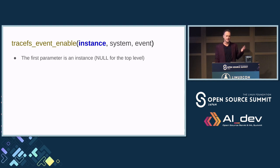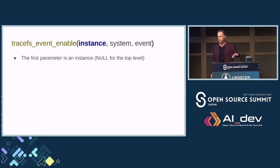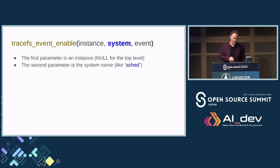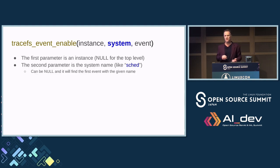The next thing is tracefs_event_enable, which takes three parameters. The first parameter — if null, it's /sys/kernel/tracing — but you can also pass in an instance, like /sys/kernel/tracing/instances/foo. The instance directory creates a whole new ring buffer with its own set of events and controls. The second parameter is the system — like 'sched'. Inside the tracefs events directory there are subdirectories for each system. You can pass null for the system and it will find the event automatically — you don't have to memorize 'sched'.